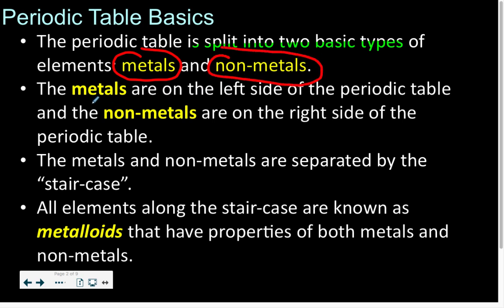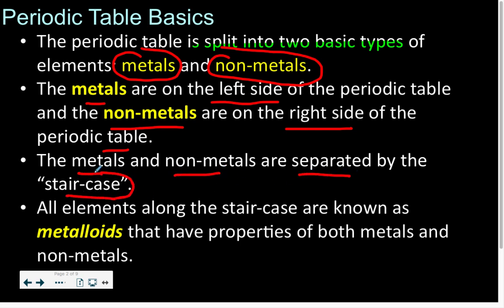The metals are on the left side of the periodic table, and the non-metals are on the right side. The periodic table is split into two sides — one side containing all the metals, the other containing all the non-metals. Metals and non-metals are separated by the staircase, and the elements along the staircase are known as the metalloids, which have properties of both metals and non-metals.